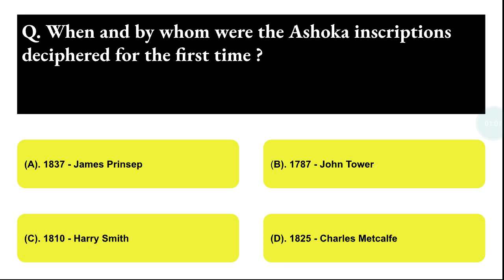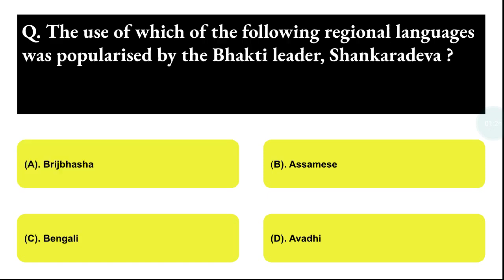Next question: when and by whom were the Asoka inscriptions deciphered for the first time? Option A: 1837, James Princip. Option B: 1787, John Dower. Option C: 1810, Henry Smith. Option D: 1825, Charles Metclyffe. The correct answer is option A, that is 1837, James Princip.